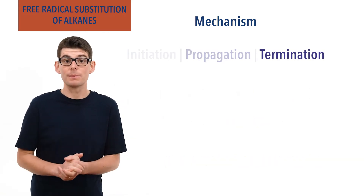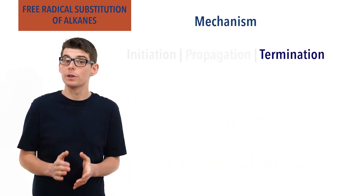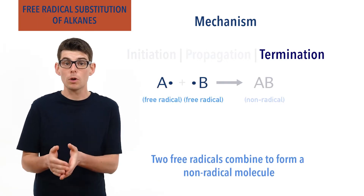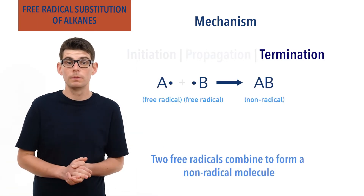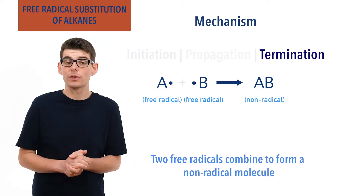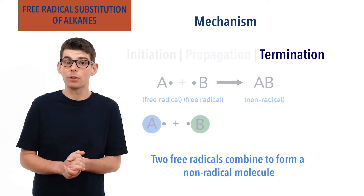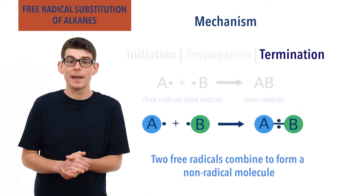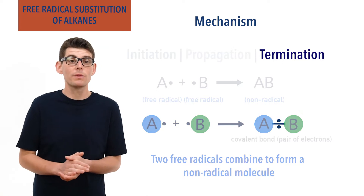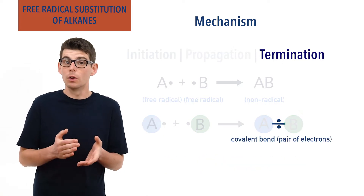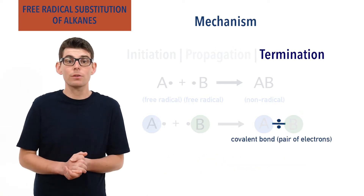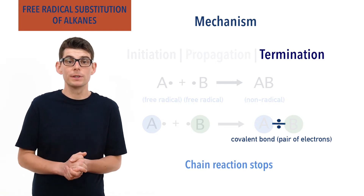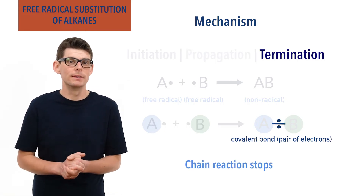Termination steps describe the coming together of two free radicals to form a non-radical, neutral molecule. As two radicals each have an unpaired electron, as they come together, the two unpaired electrons form a pair and make a covalent bond. They are no longer unpaired electrons, meaning the reaction stops at this point. The chain reaction ends.